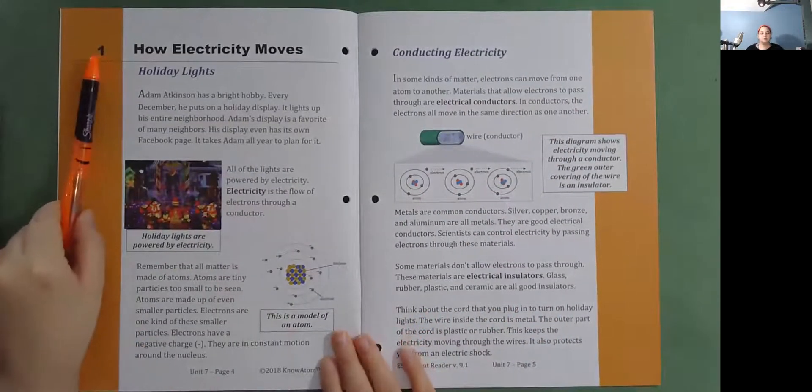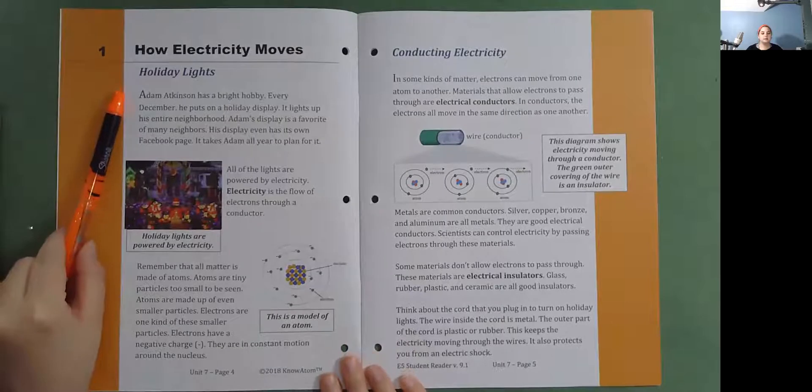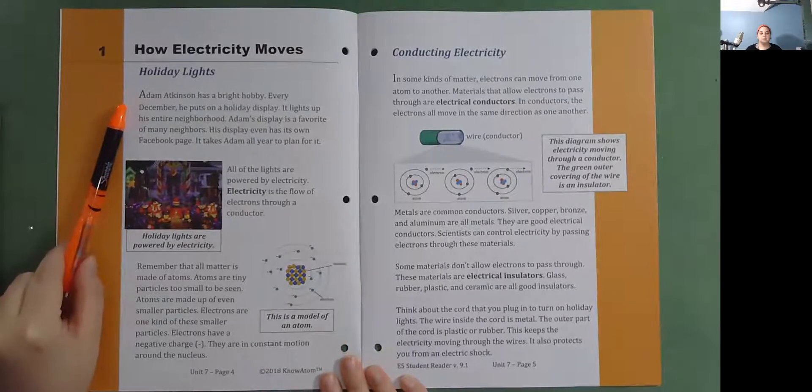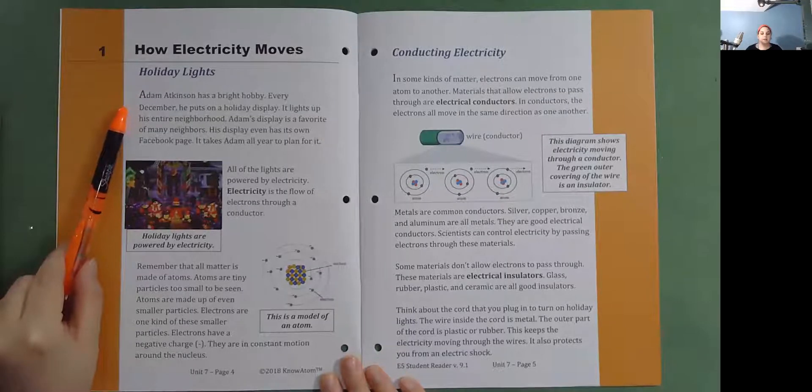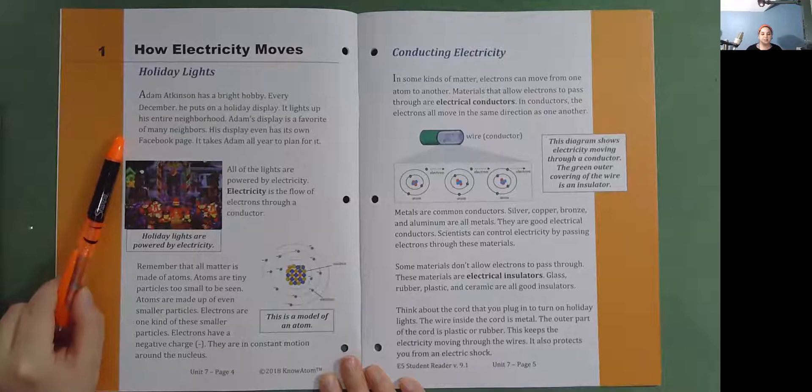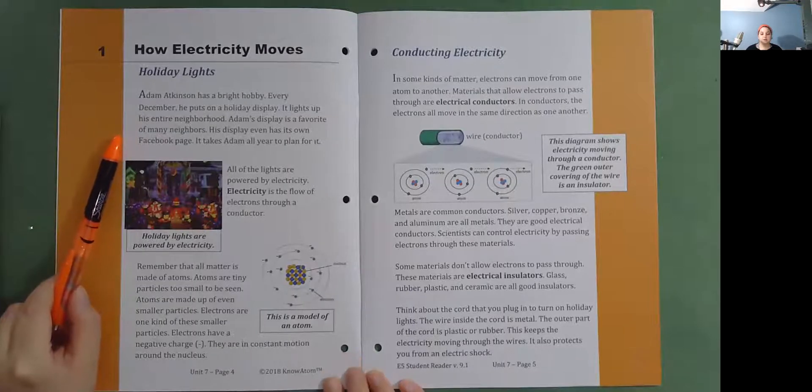How Electricity Moves: Holiday Lights. Adam Atkinson has a bright hobby. Every December, he puts on a holiday display. It lights up his entire neighborhood. Adam's display is a favorite of many neighbors. His display even has its own Facebook page. It takes Adam all year to plan for it.